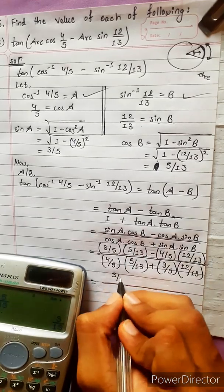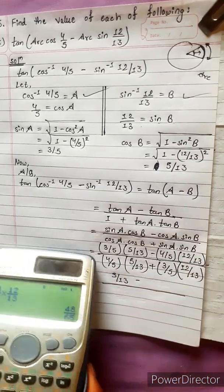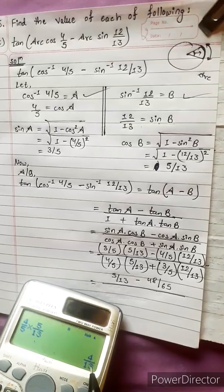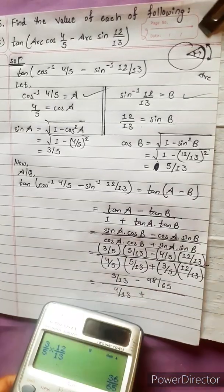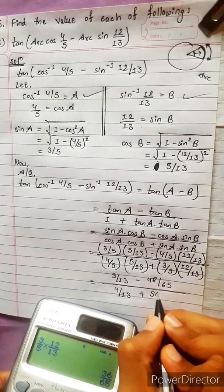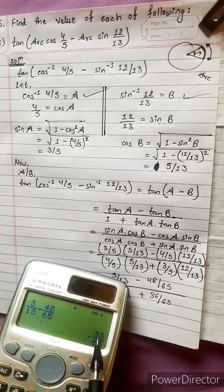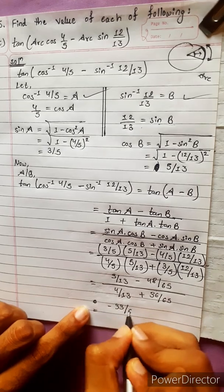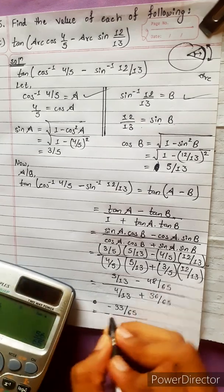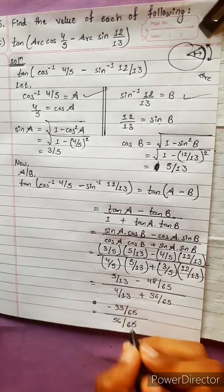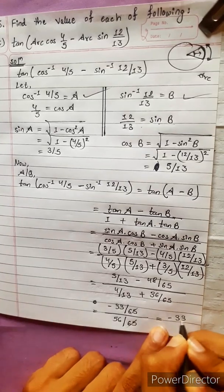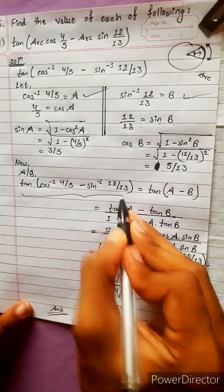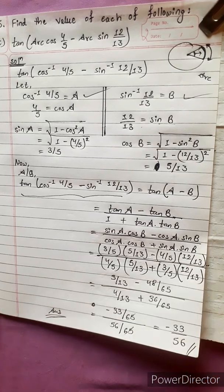Computing the numerator: 3/5 times 5/13 gives 3/13, minus 4/5 times 12/13 gives 48/65, which gives minus 33 by 65. The denominator: 4/5 times 5/13 gives 4/13, plus 3/5 times 12/13 gives 36/65, giving 56 by 65. Dividing: the 65 cancels and the final answer is minus 33 by 56. Now be ready for the next question.